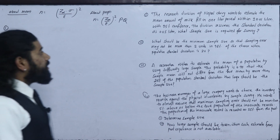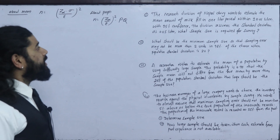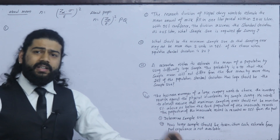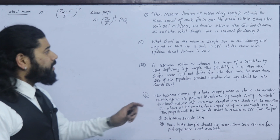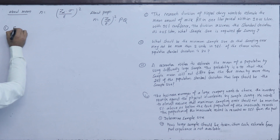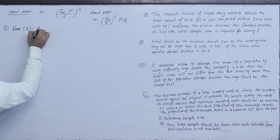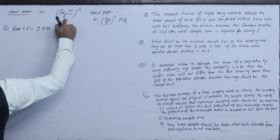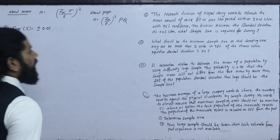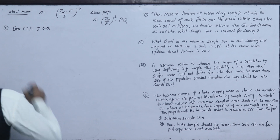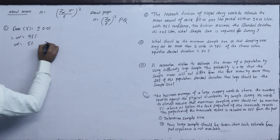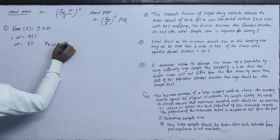Question 1: The research division of Nepal Dairy wants to estimate the mean amount of milk filled in a 1-litre packet with ±0.01 litre. So e = 0.01. With a 95% confidence level, alpha = 5%, so z = 1.96.